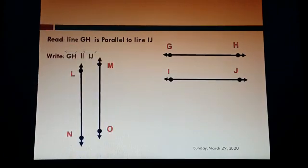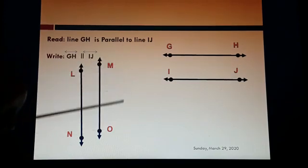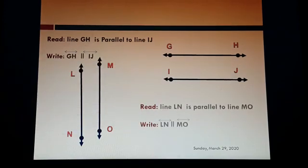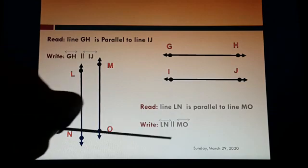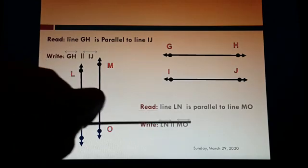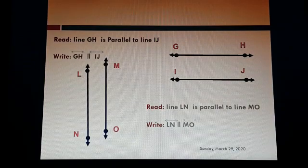One more example. Here line LN is parallel to line MO. How to read: line LN is parallel to line MO. How to write: just write the lines with their symbols, and in between place the parallel line symbol. Writing the parallel line symbol is a must.